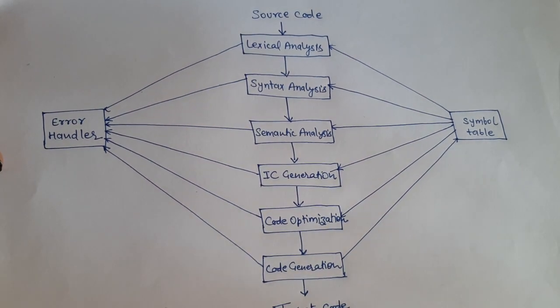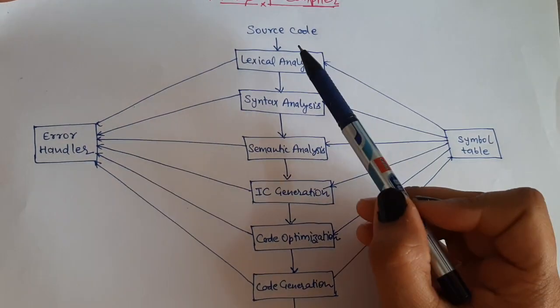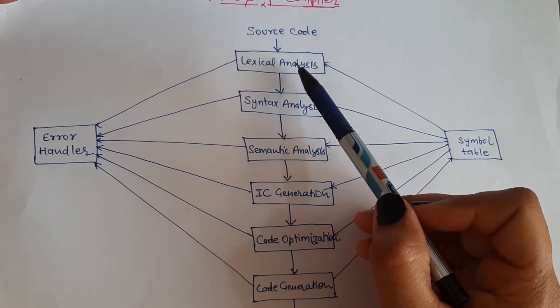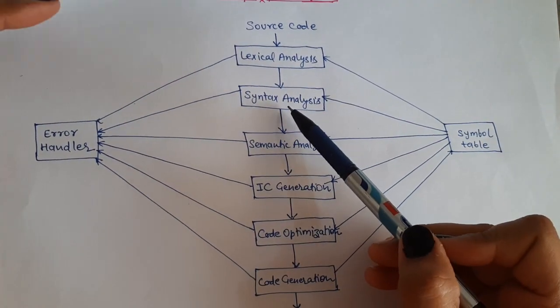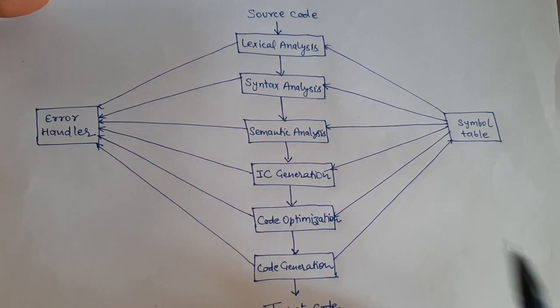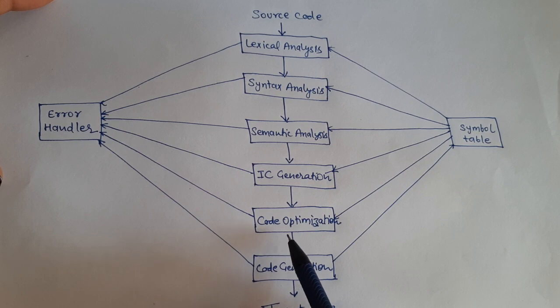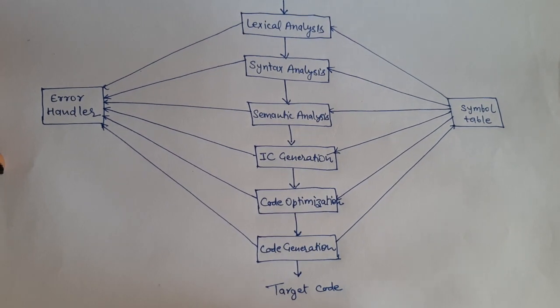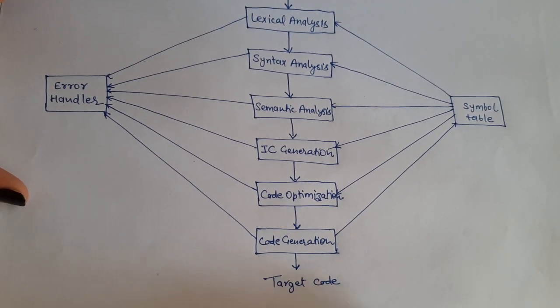So these are the phases of the compiler. First of all, source code is given to the lexical analysis phase, then to syntax analysis phase, then semantic analysis phase, then to intermediate code generation, code optimization and code generation. Finally we get the target code.